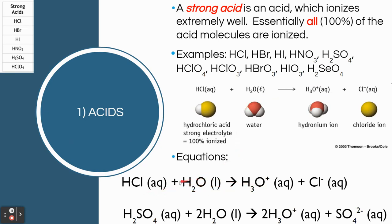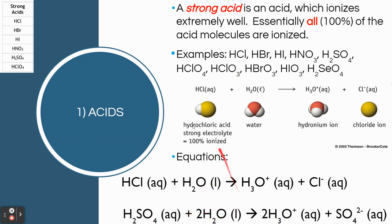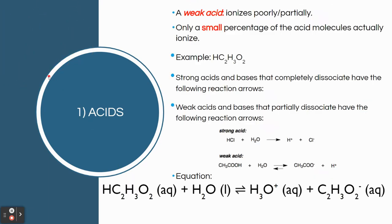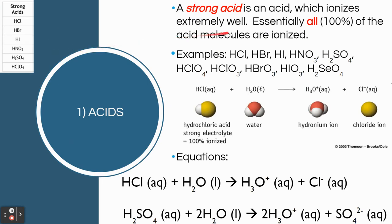For example, HCl plus H2O: all the HCl will ionize to become Cl- and H3O+. You can also write it the short way, but understand the reaction goes all the way to the right — 100%. There won't be any HCl left over. The same thing applies to H2SO4 or any of these other strong acids — they all behave in the same way.